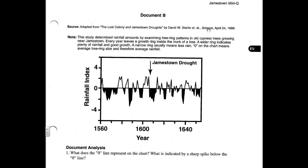This tree ring study has influenced how historians think about what went wrong in Jamestown. The note at the top of the document says this study determined rainfall amounts by examining tree ring patterns in old cypress trees growing near Jamestown. Bald cypress trees lived hundreds of years ago and grew in southeastern Virginia, and tree ring chronologies going back 800 years have been made available for the Jamestown area.